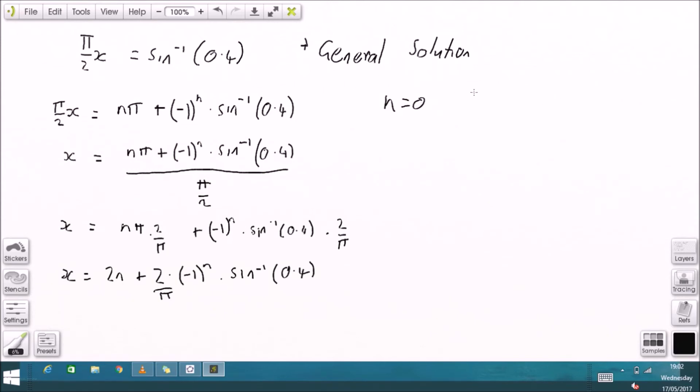And I'll just try n equals 0 for the first value. So just substituting n equals 0 into the equation, and when I evaluate that, n equals 0 gives me 0.26.